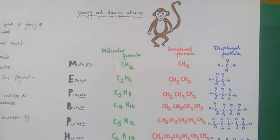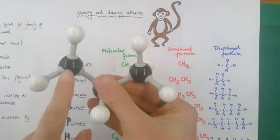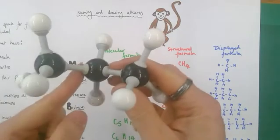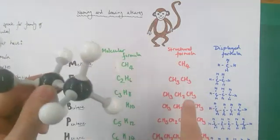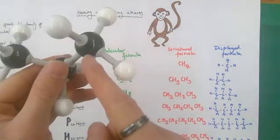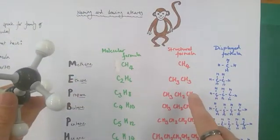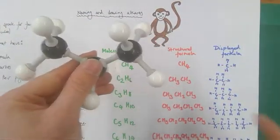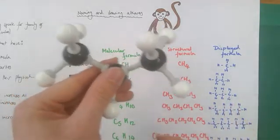The next one up is propane, C3H8. If I build that molecule for you, you can see how the structural formula is generated. The first carbon in this molecule is surrounded by three hydrogens, CH3. The second one, the central carbon, is surrounded by two hydrogens, CH2. And the third carbon is surrounded by three hydrogens, CH3. The displayed formula simply shows you all the single bonds as well, including those between the carbons.